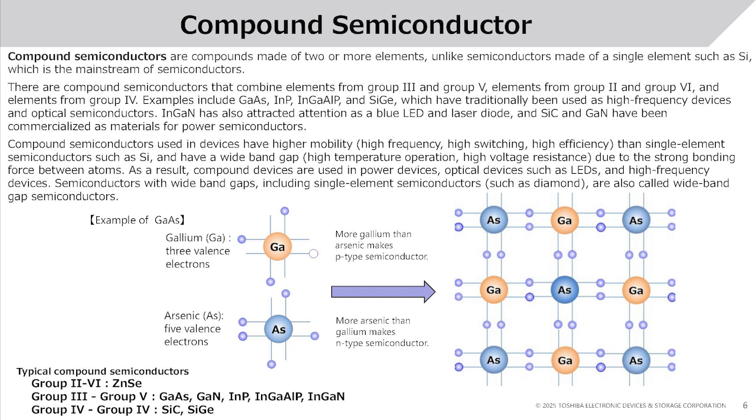Semiconductors with wide band gaps, including single-element semiconductors such as diamond, are also called wide band gap semiconductors.